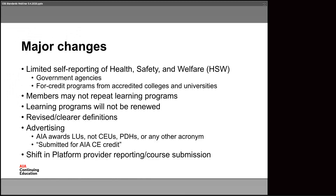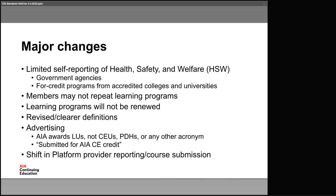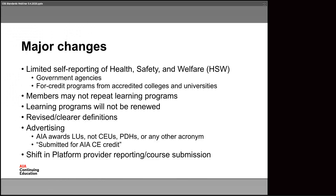Another big change on the member side: members may not repeat learning programs. Under the old guidelines, you could take the same course once every 12 months. This didn't make sense — if you take English 101 more than once, you don't get credit for it more than once. This also impacts courses with annual updates, such as a 2019 building codes course versus a 2020 building codes course. Where providers previously just updated materials and continued with the same course number, the new requirement says that course should have been its own stand-alone thing, and the updated version should be submitted as a new course.